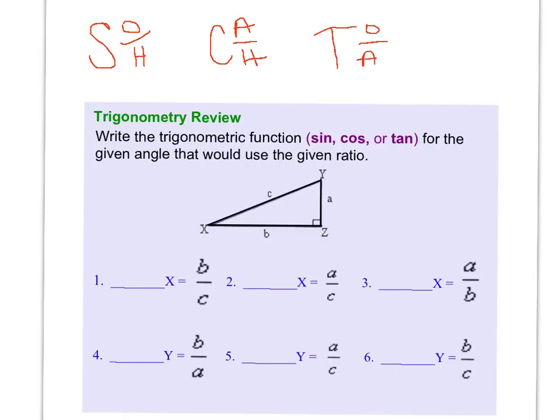So that's what I'm going to use to help me figure out problems one through six. You'll notice that the directions ask us to write the trigonometric function for the given angle that would use the given ratio. So basically we're working backwards here and we are given the ratio and we're given which angle we need to figure out if it's sine, cosine, or tangent.